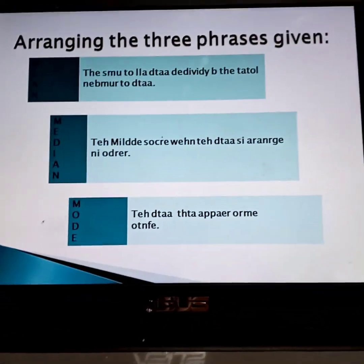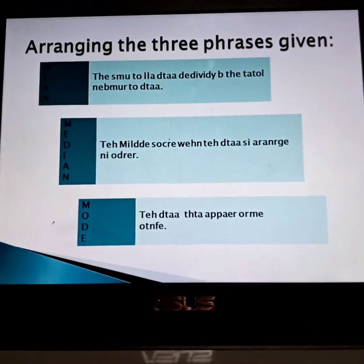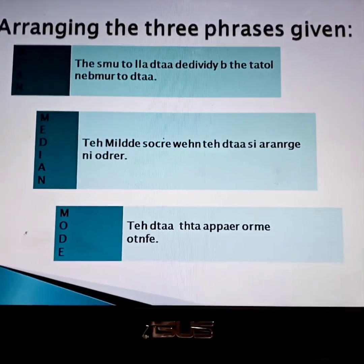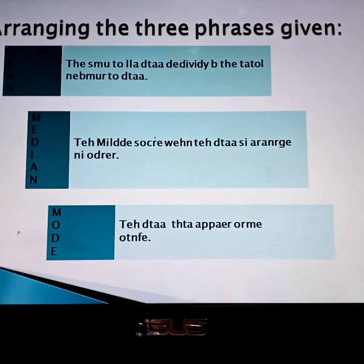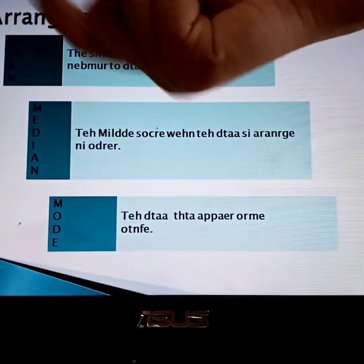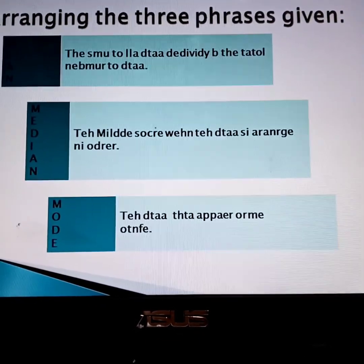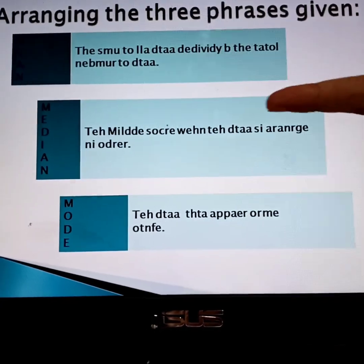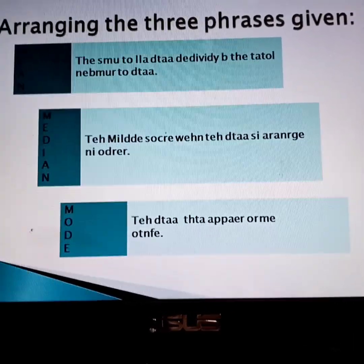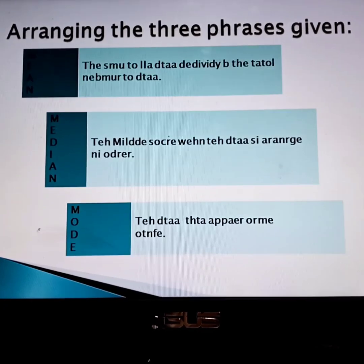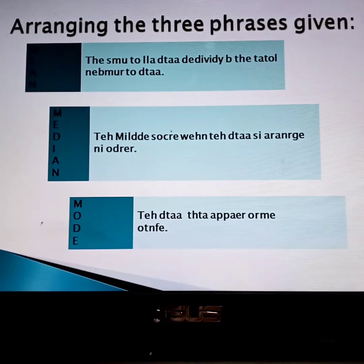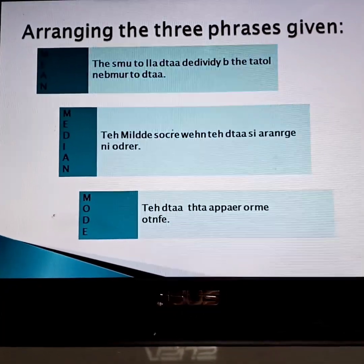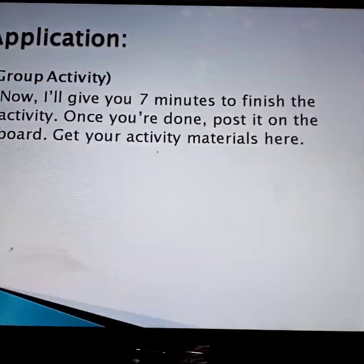Good job! I hope you really understand our lesson, class. Since you really understand, kindly arrange the 3 phrases here. Michael, can you arrange the given meaning of mean? The sum of all data divided by the total number of data. Excellent! The median — Imelda: the middle score when the data is arranged in order. Very good! And mode is the data that appears more often. I hope you really understand our lesson for today, class.